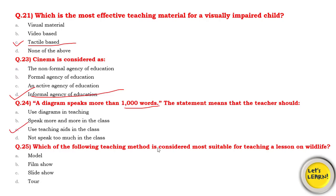Question number 25: Which teaching method is most suitable for teaching a lesson on wildlife? Options include: use a model, show a film, show a slide show, or take a field trip. A field trip gives direct experience and is the best way to teach. But if the class is small and you cannot take them to wildlife, showing a film is also effective. The best way is the field trip.